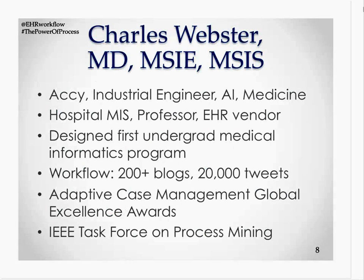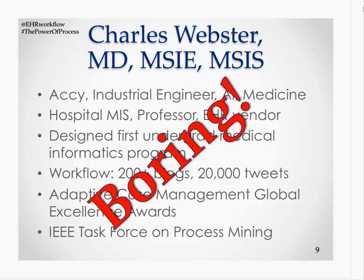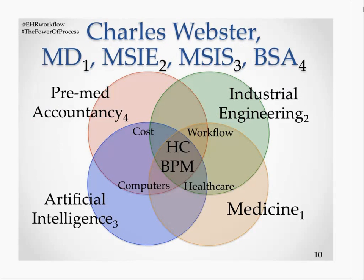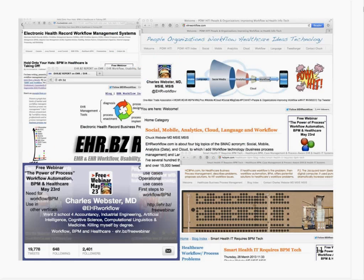Rather than read my bio, I have a Venn diagram representing my four degrees: I was a pre-med accountancy major who eventually went to medical school, and I also have a master's in industrial engineering and artificial intelligence with focus in computational linguistics and cognitive science. I have a bunch of websites with mostly educational content, and I'm trying to build a community of people interested in what academics call process-aware information systems — systems that can represent, understand, reason about, and improve processes automatically or semi-automatically.